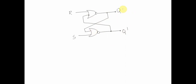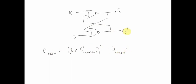Now let's see whether we can call this circuit a memory. The output of the first NOR gate feeds back to the second, and the output of the second feeds back to the first. To figure out how Q and Q-bar change, let's write the equations. Q_next equals NOT of (R OR Q_bar_current), and Q_bar_next equals NOT of (S OR Q_current).